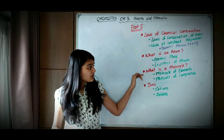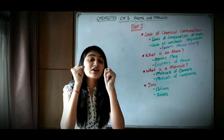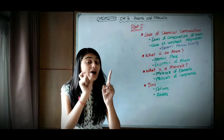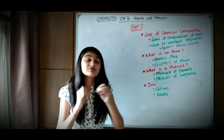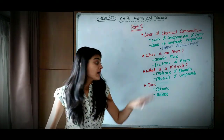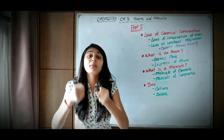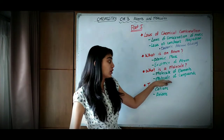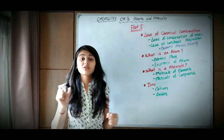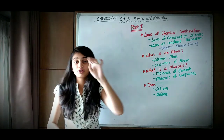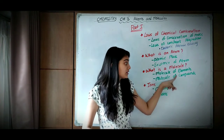Molecules of elements have the same kinds of atoms — same kind, not necessarily the same number. Molecules of compounds have different kinds of atoms, but in the same proportion. The molecule of a compound has different kinds of atoms but in the same proportion — the constant proportion stated by the law of constant proportion. So this is what molecule in an element and molecule in a compound is. A molecule is the smallest indivisible particle of elements and compounds.